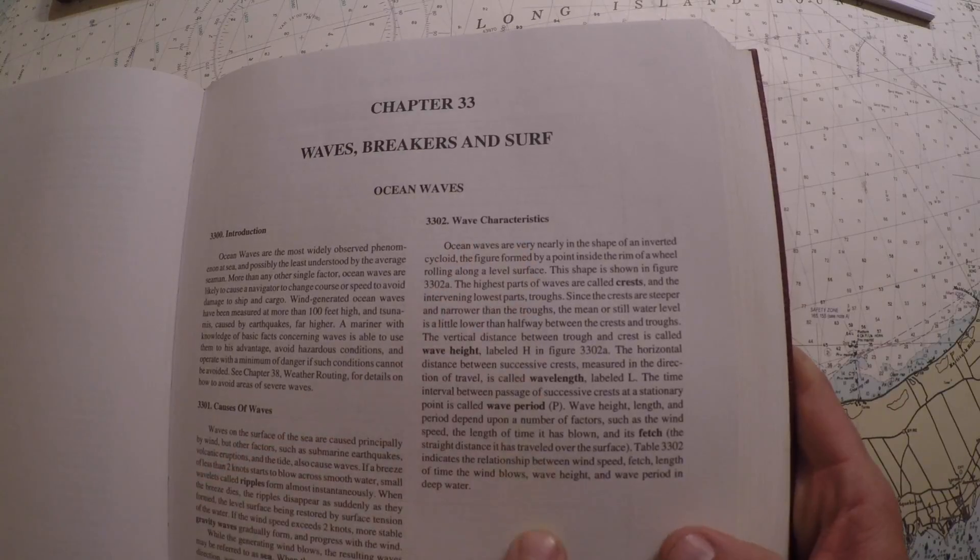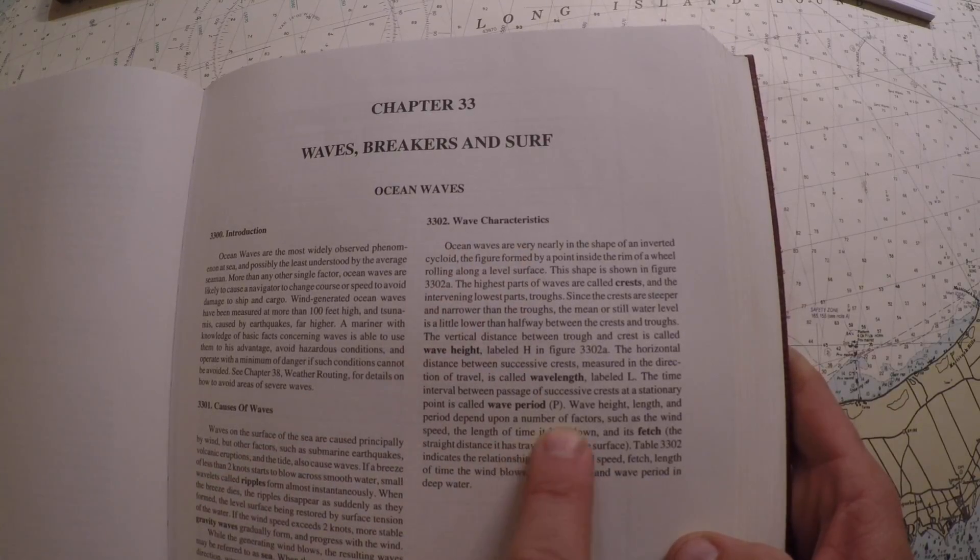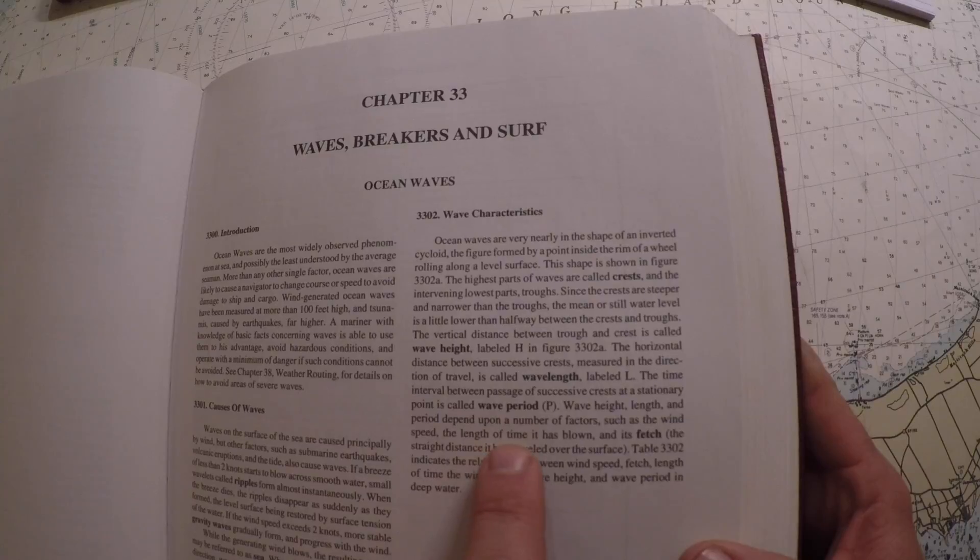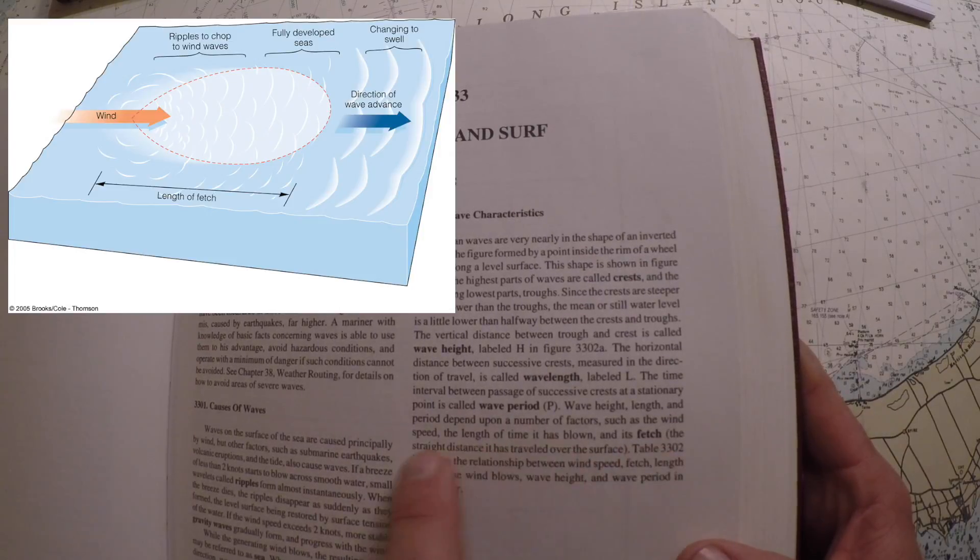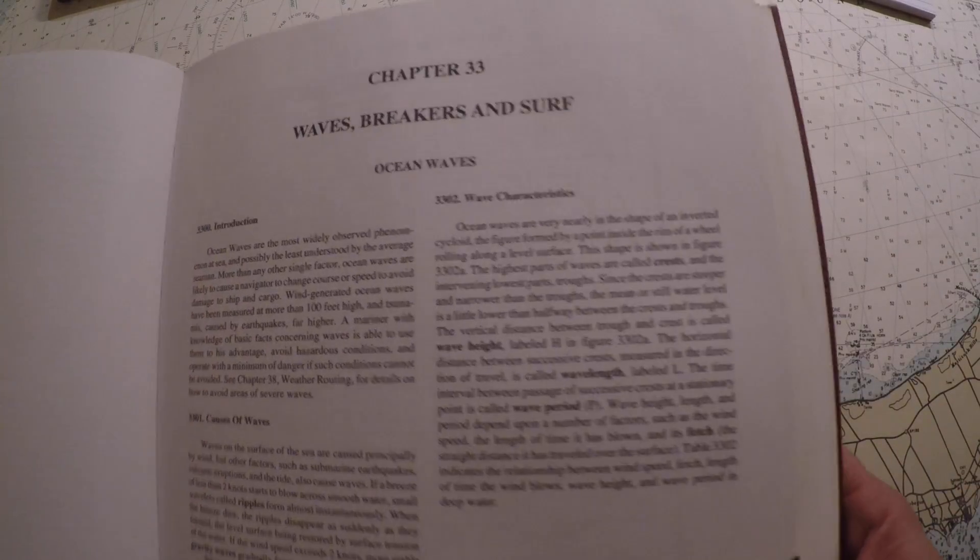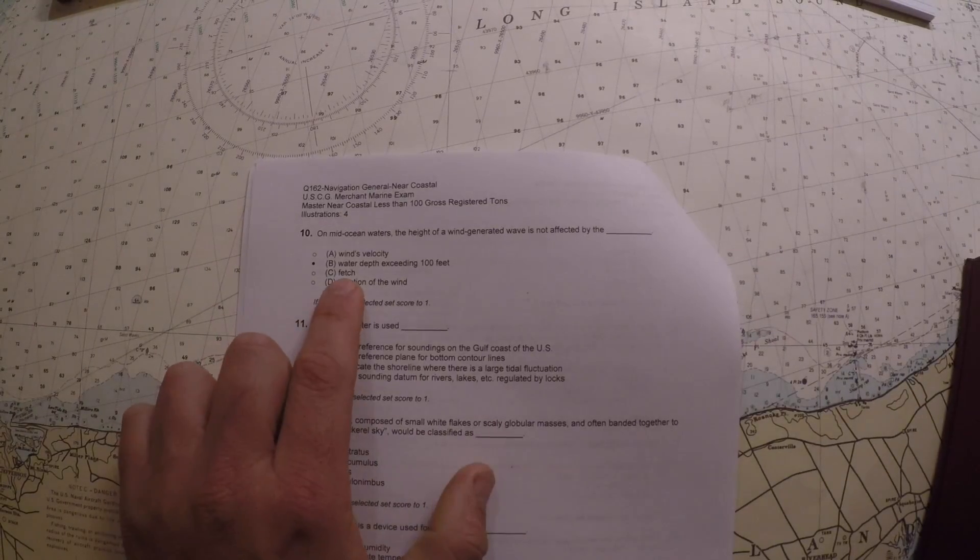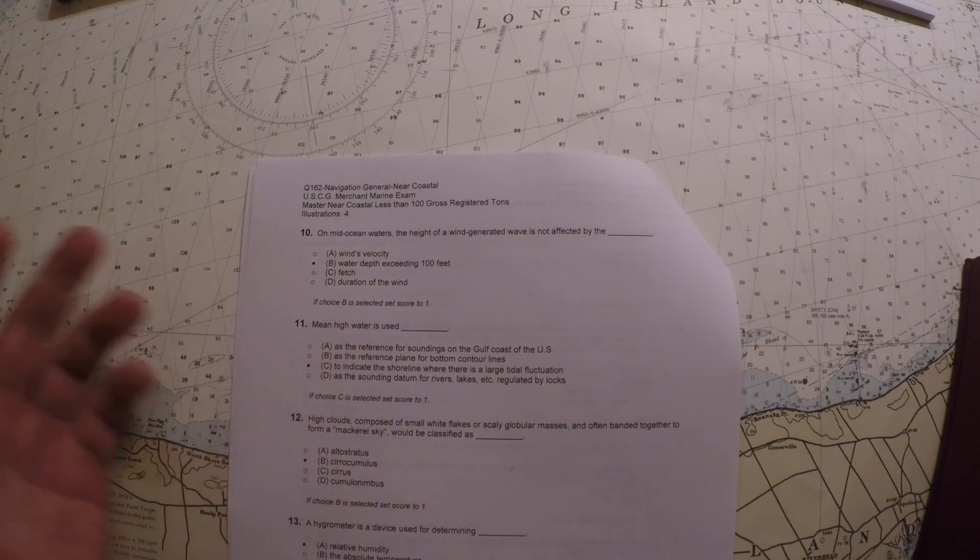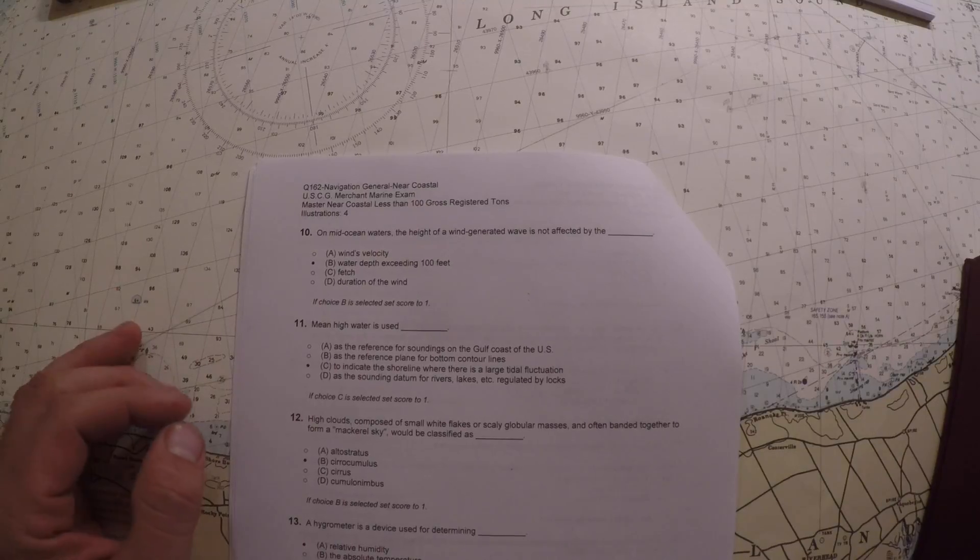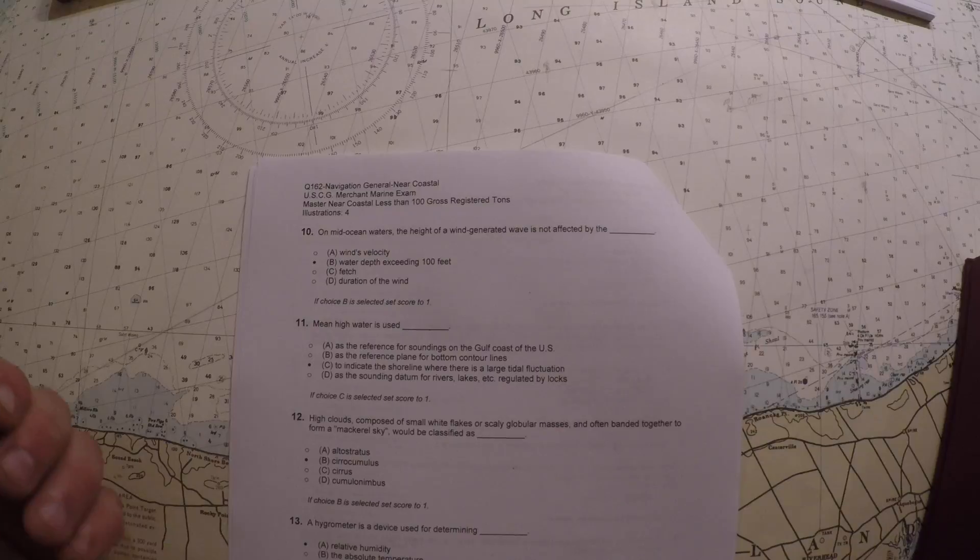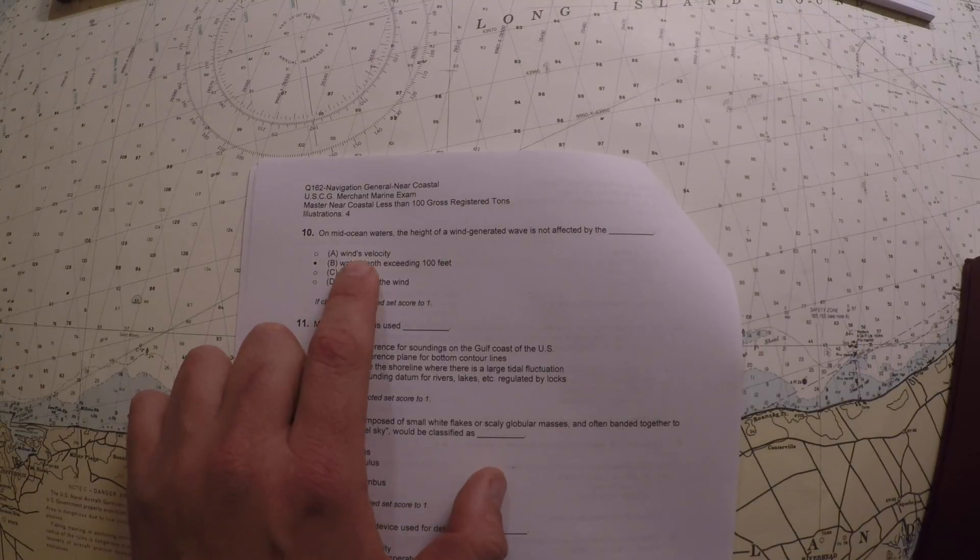Under wave characteristics there's a nice sentence that says wave height, length, and period depend on a number of factors such as the wind speed, the length of time it takes to blow, and its fetch. The fetch is the straight distance it has traveled over the surface, so in essence it's the distance that a wind is blowing over the surface of the sea. Given what Bowditch says, it does depend on fetch, velocity, and duration. Those three factors go into what's called a fully developed sea diagram. The maximum theoretical height of a wave is generated by fetch, velocity, and duration of the wind.